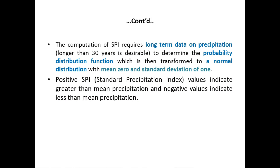The computation of SPI requires long-term precipitation data, normally longer than 30 years, to determine the probability distribution function. This is then transformed to a normal distribution having a mean of zero and a standard deviation of one. Positive SPI values indicate greater than mean precipitation, and negative values indicate less than mean precipitation.